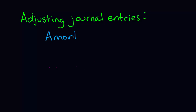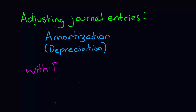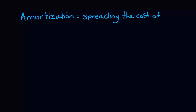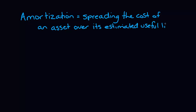Hi everyone, today we're continuing our discussion of adjusting journal entries, and today we're talking about amortization or depreciation. I'm your instructor Brandy. We record amortization on fixed assets, also called capital assets, because these assets lose value over time. We want to record the expense over time as they lose value, and this is called amortization expense. In this tutorial we are going to focus on straight line amortization.